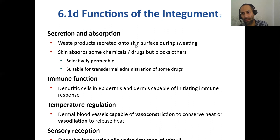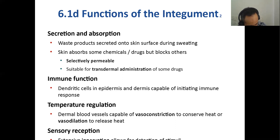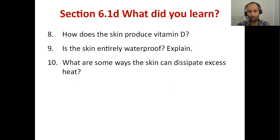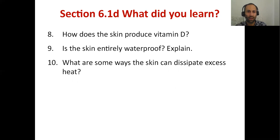The skin secretes sweat and sebum. Immune function comes from dendritic cells or Langerhans cells — phagocytes — in the skin. The skin also handles temperature regulation and sensory reception. The skin produces vitamin D by exposure to sunlight. The skin is not entirely waterproof — sweat can still get across. The skin dissipates excess heat by vasodilation of blood vessels close to the skin, and also by sweating.